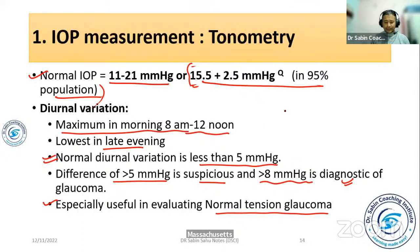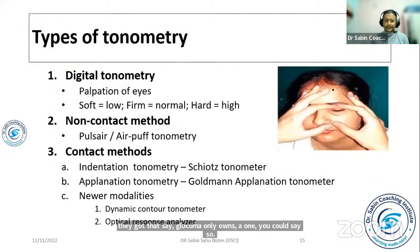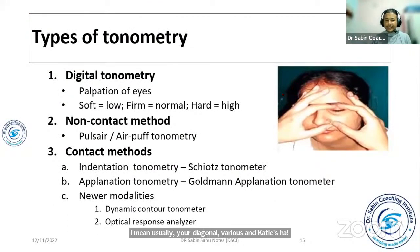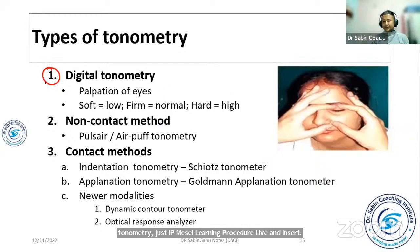Tonometry is the procedure used to measure IOP. There are several methods. A simple and easy method is digital tonometry, which involves palpating the eye with the index finger.